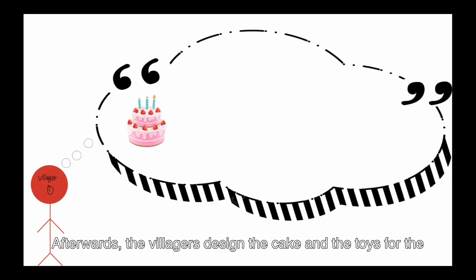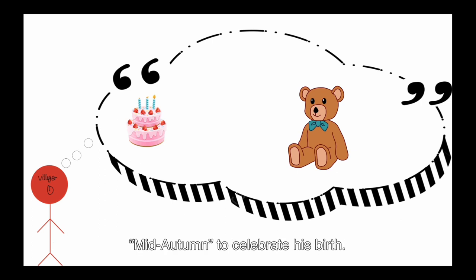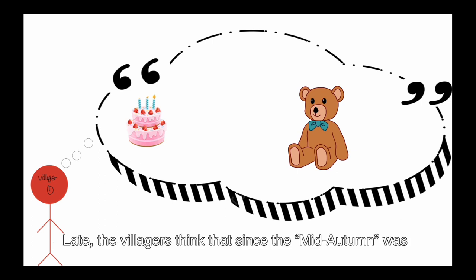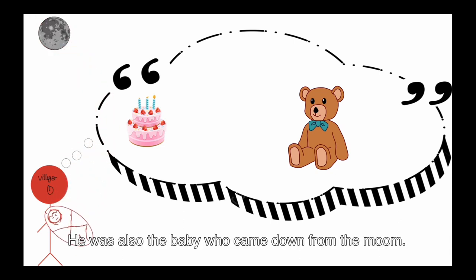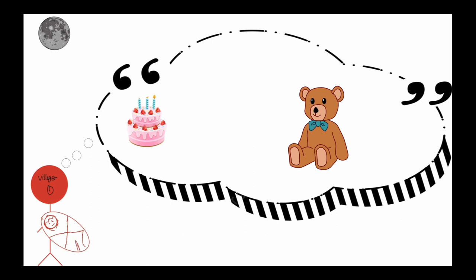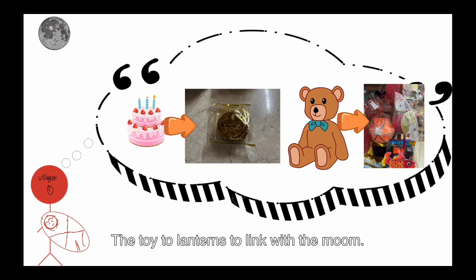After a while, the religious designed the cake and the toy for the Mid-Autumn to celebrate his birth. Later, the village found that since the Mid-Autumn was Chang'e's son, he was also the baby to come down from the moon. They named the cake the moon cake, the toy the lantern to link with the moon.